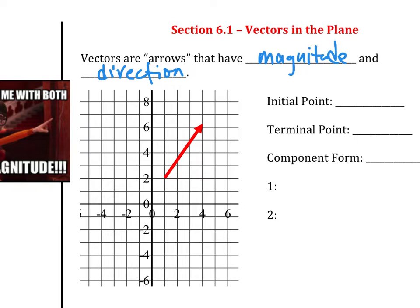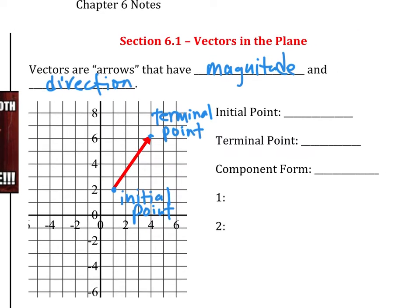This line has two points: a starting point and an ending point — the ending point being where the arrow is pointing. The starting point we call the initial point, and the ending point we call the terminal point. In this case, the initial point is at the coordinate (1, 2) and the terminal point is at (4, 6).